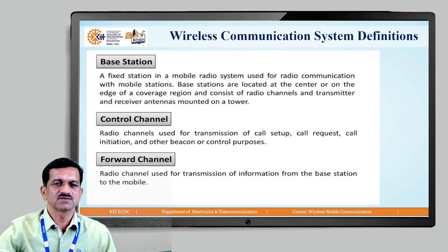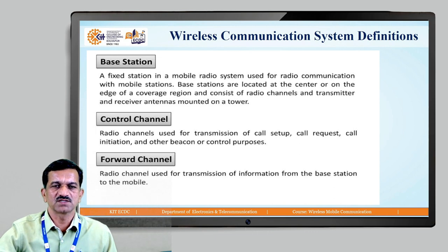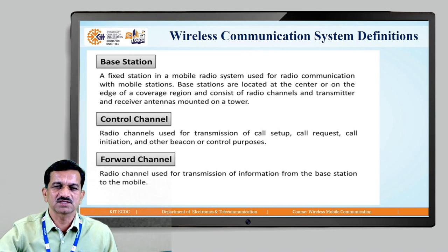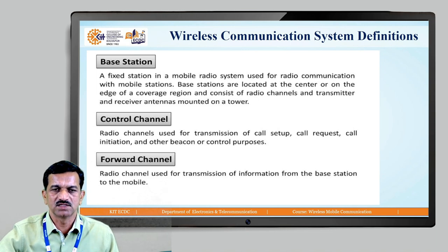Base station is one of the main things in the wireless communication system. Whatever mobile stations are there, these are connected with the base station — a fixed station in a mobile radio system used for the radio connection with mobile stations. Base stations are located at the center or on the edge of a coverage region and consist of radio channels, transmitters, receivers, and antennas mounted on a tower. This is the main entity of the wireless communication system.